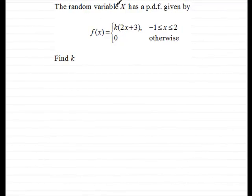Now we're given the question that the random variable x has a probability density function given by f of x equals a constant k multiplied by all of 2x plus 3 for values of x between minus 1 and 2 inclusive and it's 0 otherwise. And what we've got to do is find the value of that constant k.